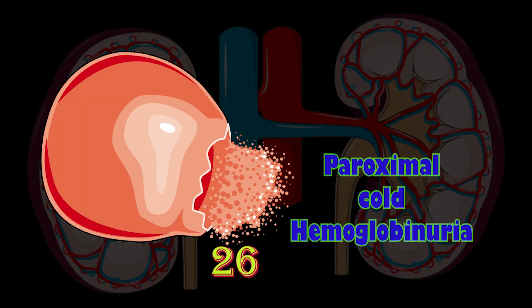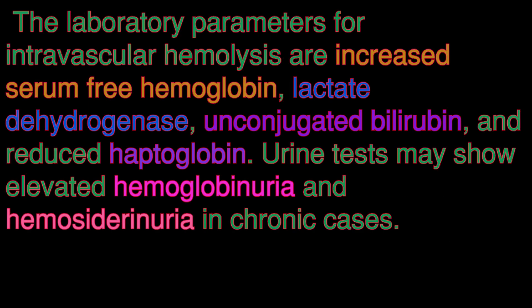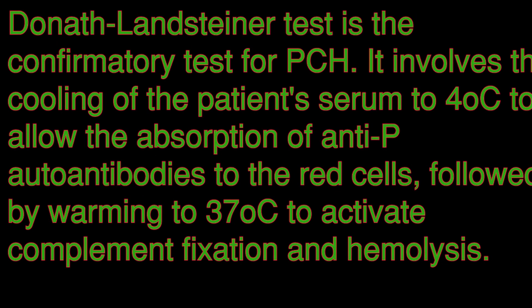Paroxysmal cold hemoglobinuria is an autoimmune hemolytic anemia featuring complement-mediated intravascular hemolysis after cold exposure. Infectious agents are implicated in the acute form of paroxysmal cold hemoglobinuria.